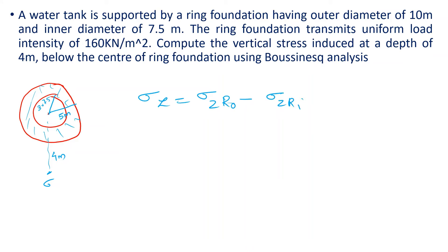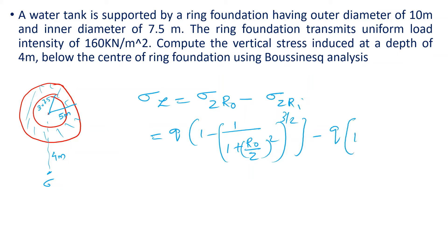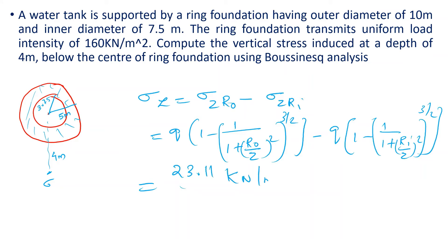We calculate the ring foundation stress using σz = q × [1 − 1/(1 + (ri/z)²)^(3/2)] applied to the outer portion minus the inner portion. The resulting vertical stress is 23.11 kN/m².